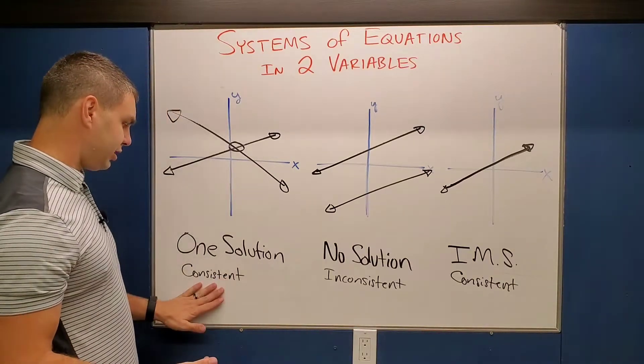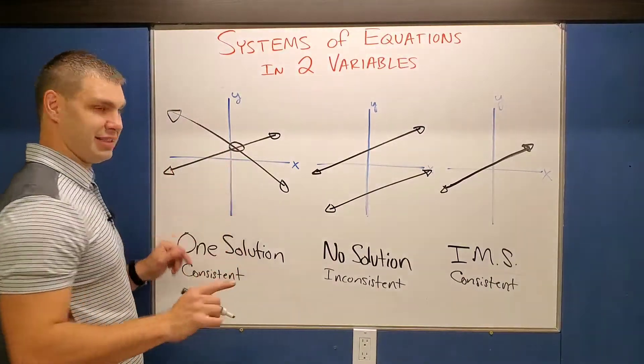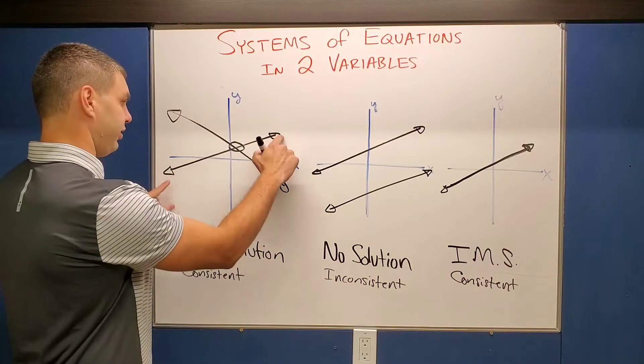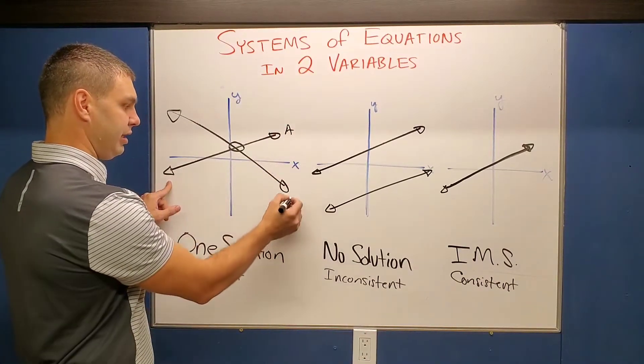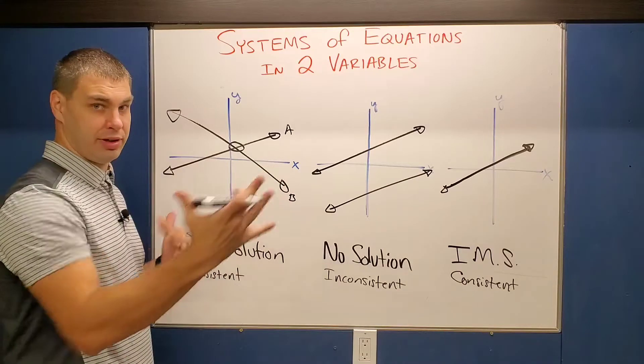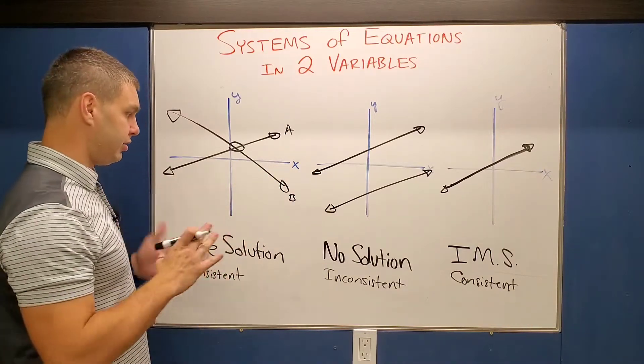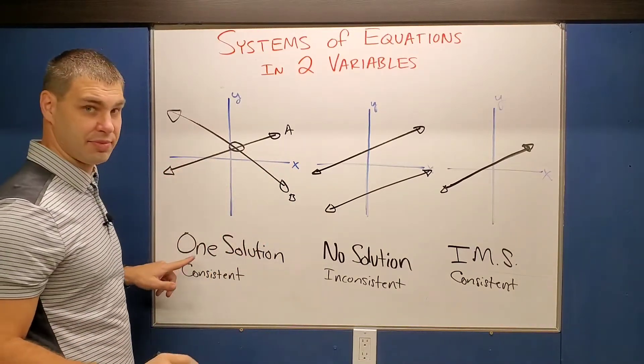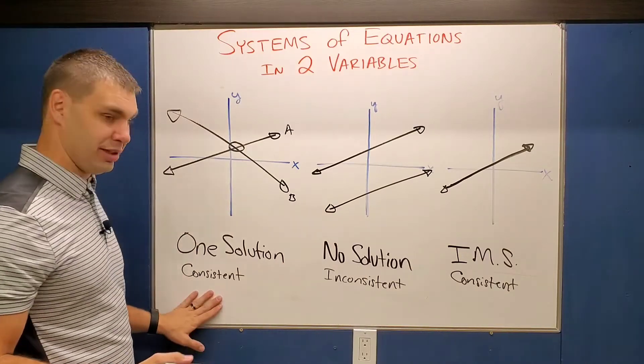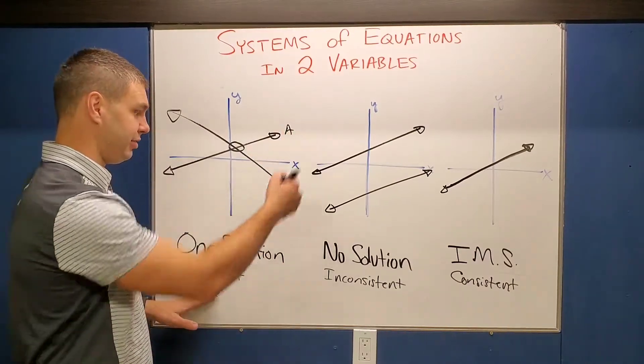This one with one solution is gonna be independent. I could draw this first line, if I call this line A, and then line B could go wherever it wants. It could be a totally different spot, and it would still cross once. So therefore, this one is gonna be independent of the other line.